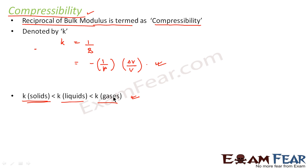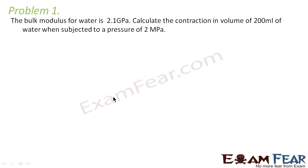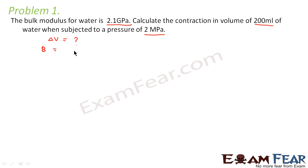That's all about bulk modulus. Now let us look at a few problems. The first problem states: the bulk modulus for water is 2.1 gigapascal. Calculate the contraction in volume of 200 milliliters of water when subjected to a pressure of 2 megapascal. We have to calculate the value of ΔV. Bulk modulus B is given as 2.1 gigapascal, where 1 gigapascal equals 10⁹ pascals.